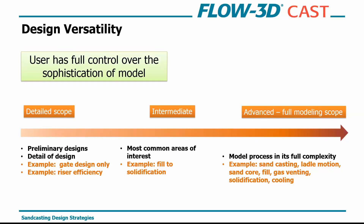We break versatility into three parts. First is the detailed scope — something under a microscope — just one part of the process you are trying to optimize. This can be used for preliminary designs, detailed designs, looking at just your gate design or how efficiently your risers are working. We'll look at an example of a ladle fill in a moment.